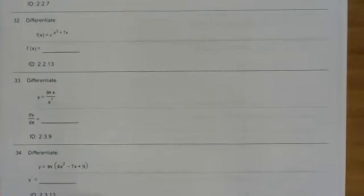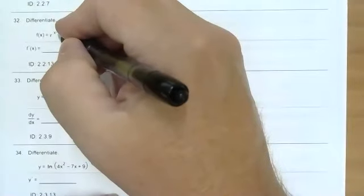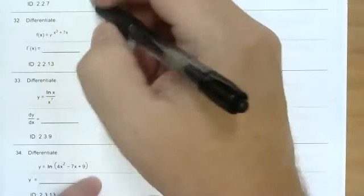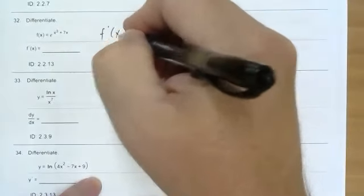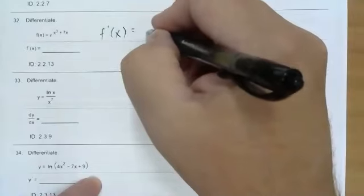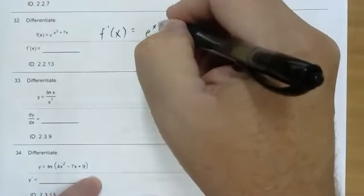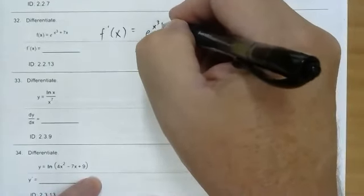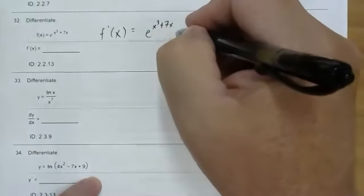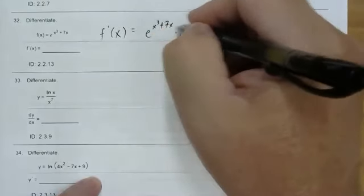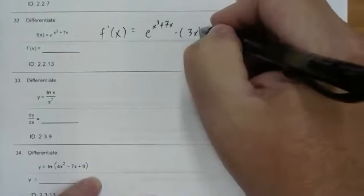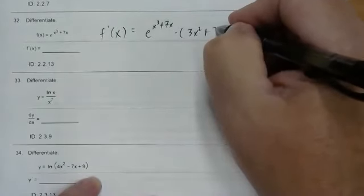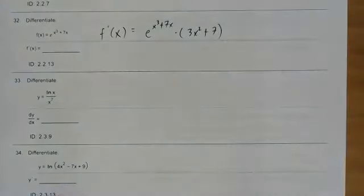Another natural exponential function — this one is pretty straightforward. You rewrite or copy the whole exponential function and multiply by the derivative of the exponent. The derivative of 3x² + 7 is 6x, so the answer is e^(3x²+7) · (6x).